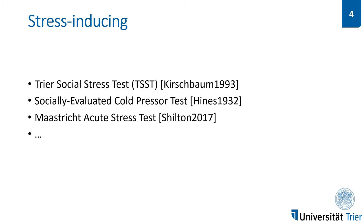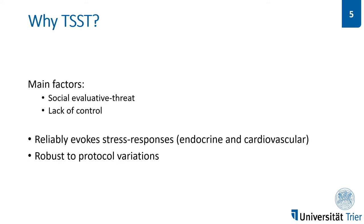To understand how stress affects us, psychologists created tasks that induce stress in order to monitor it in a controlled environment. Some examples of the developed tasks are the TRIA Social Stress Test, which we will be focusing on here, the Socially Evaluated Cold Pressor Test, and the Master's Acute Stress Test. The TSST was the first test to reliably evoke stress responses and is to this day widely used in stress research. The main factors for inducing stress are social evaluative threats and lack of control, which have been found to be robust to protocol variations, meaning that design changes shouldn't affect the outcome as long as those two factors are still present.